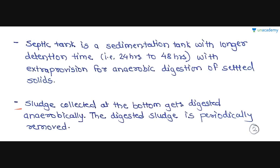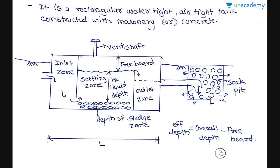The sludge collected at the bottom gets digested anaerobically. This digested sludge at the bottom of the tank is then periodically removed. A septic tank is a rectangular, watertight, airtight tank constructed with masonry or concrete.